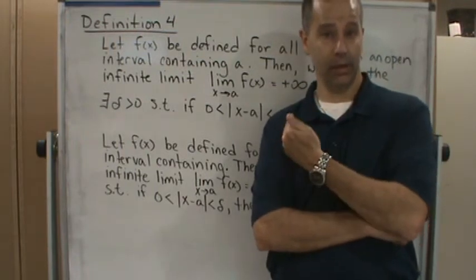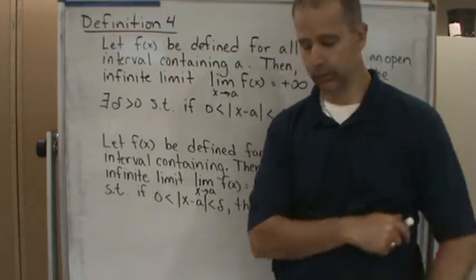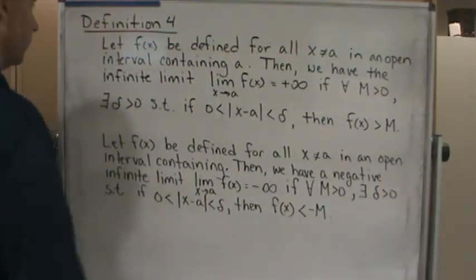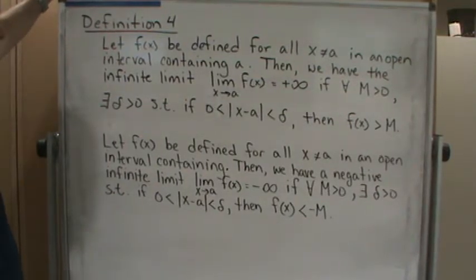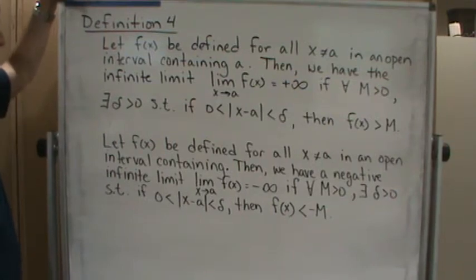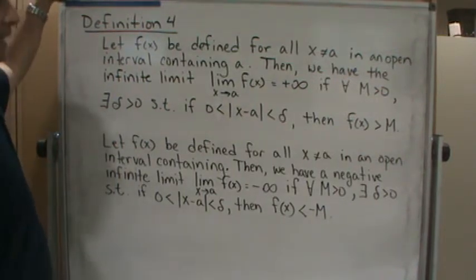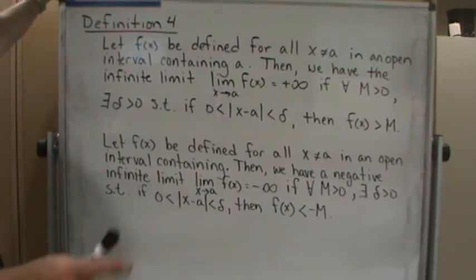Here's the definition. We're going to deal with the positive and negative infinite limits. The first one says: let f(x) be defined for all x not equal to a in an open interval containing a. Again, very similar language to when we were talking about informal definitions.